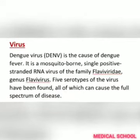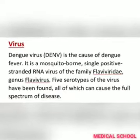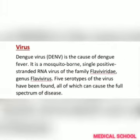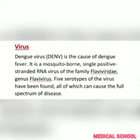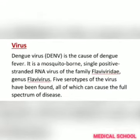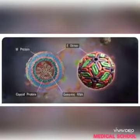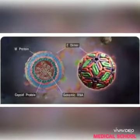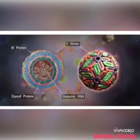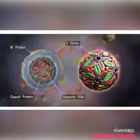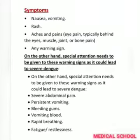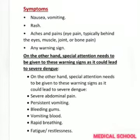The dengue virus is a mosquito-borne, single positive-strand RNA virus of the family Flaviviridae and genus Flavivirus. Five serotypes of the virus have been found, all of which can cause the full spectrum of disease symptoms.